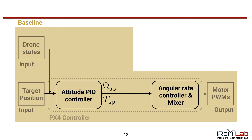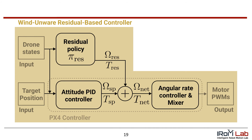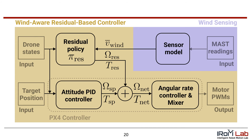Baseline is an attitude PID controller based on the popular open source PX4 Autopilot. This attitude controller sends a body rate and thrust setpoint to the rate controller and mixer. Wind-unaware learns a residual policy that adds a body rate and thrust setpoint to the output of baseline, allowing wind-unaware to learn and improve upon baseline in simulated wind. Finally, wind-aware learns a residual policy that has access to the wind estimate, V_WIND, in both training and test time.